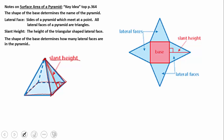The shape of the base also determines how many triangular lateral faces you have. A square base gives four lateral faces, a triangular base gives three, and an octagonal base gives eight. If we unfold the pyramid into a net — that two-dimensional drawing of the three-dimensional figure — we can see the four lateral faces labeled one through four, the square base in the middle, and the slant height marked on each face.